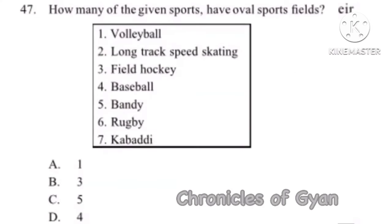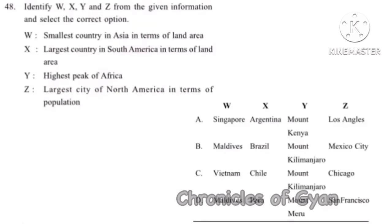Question 47: In sports, there is only one sport that has an oval sports field — that is Long Track Speed Skating. So the correct option is Option A.